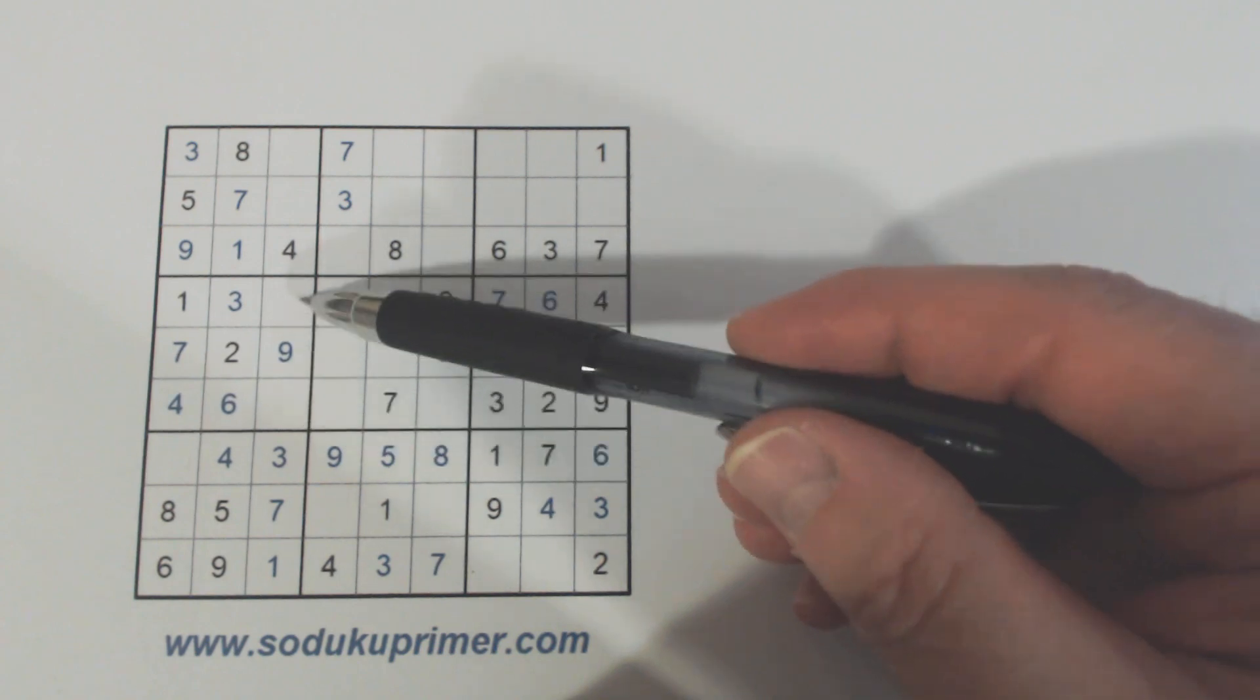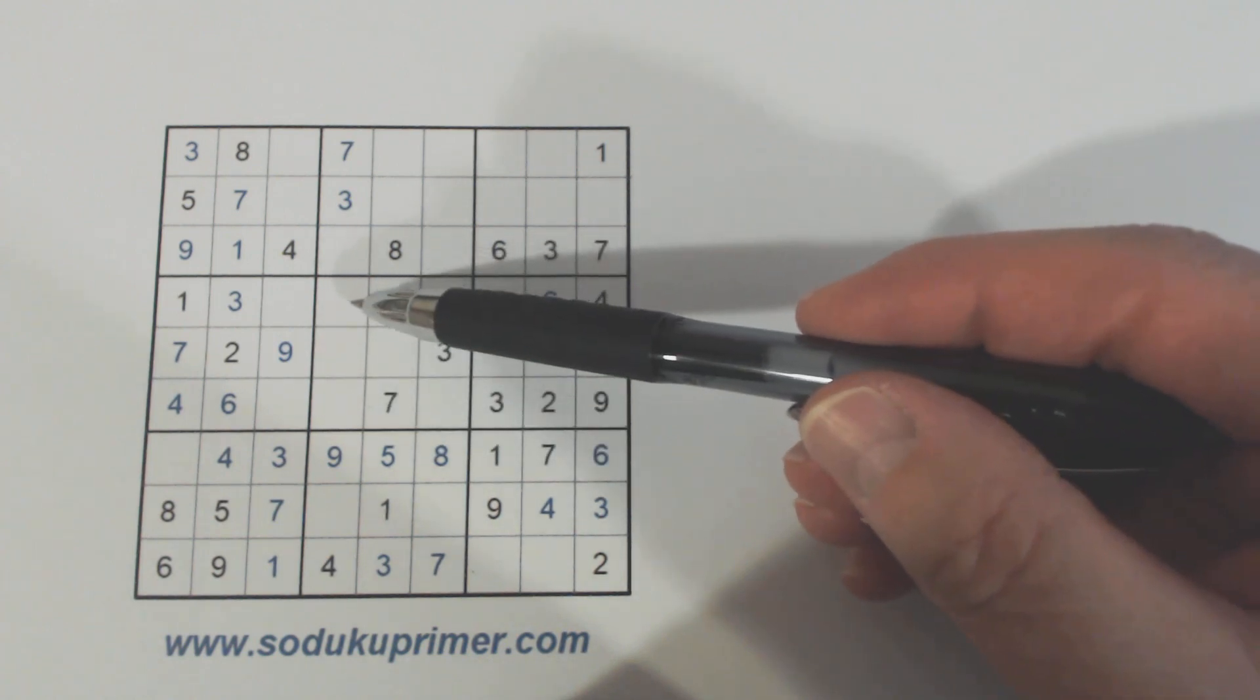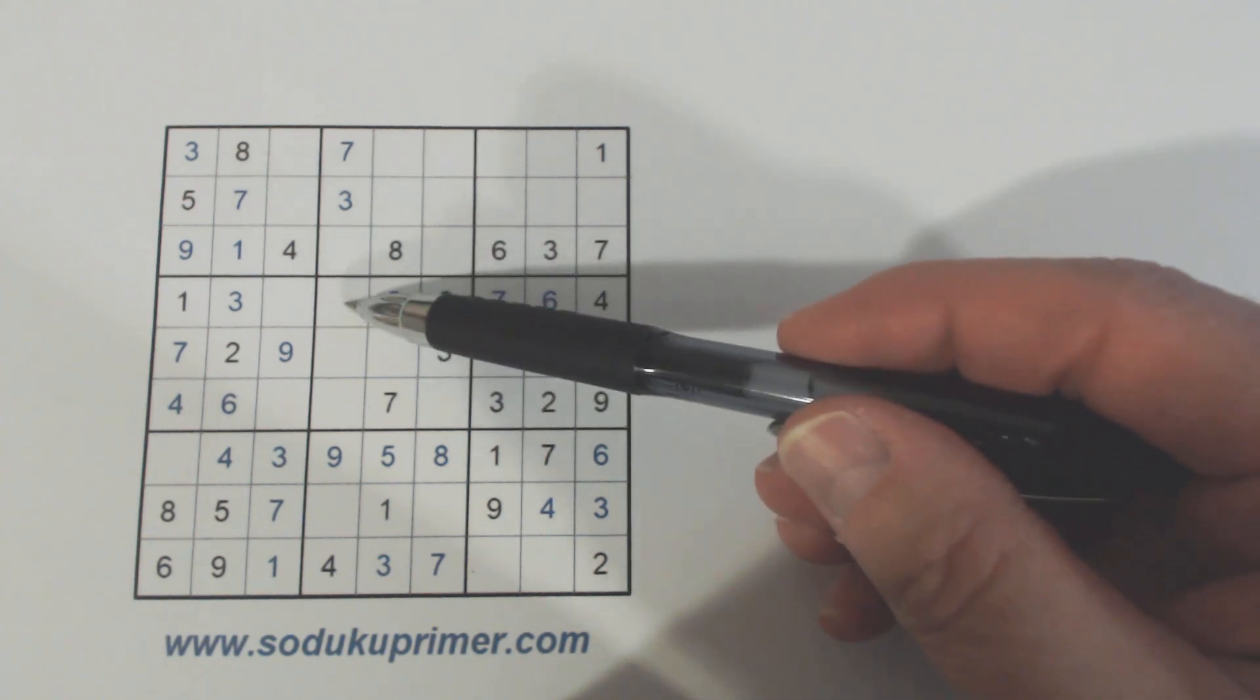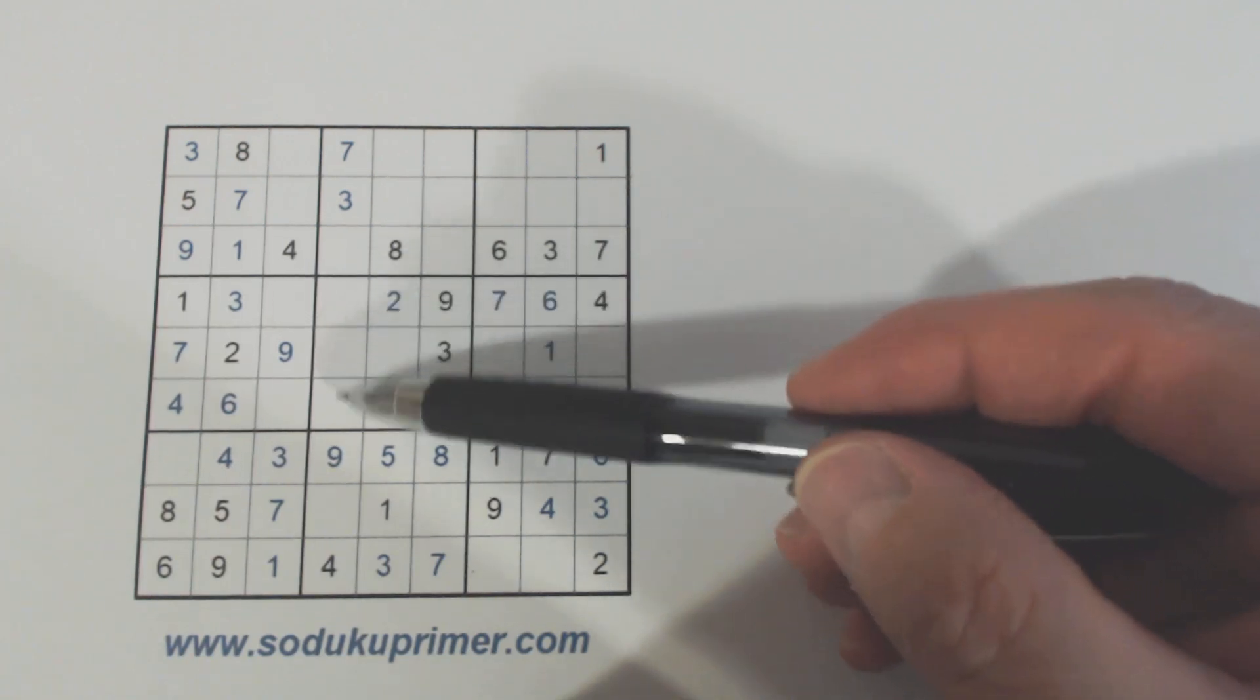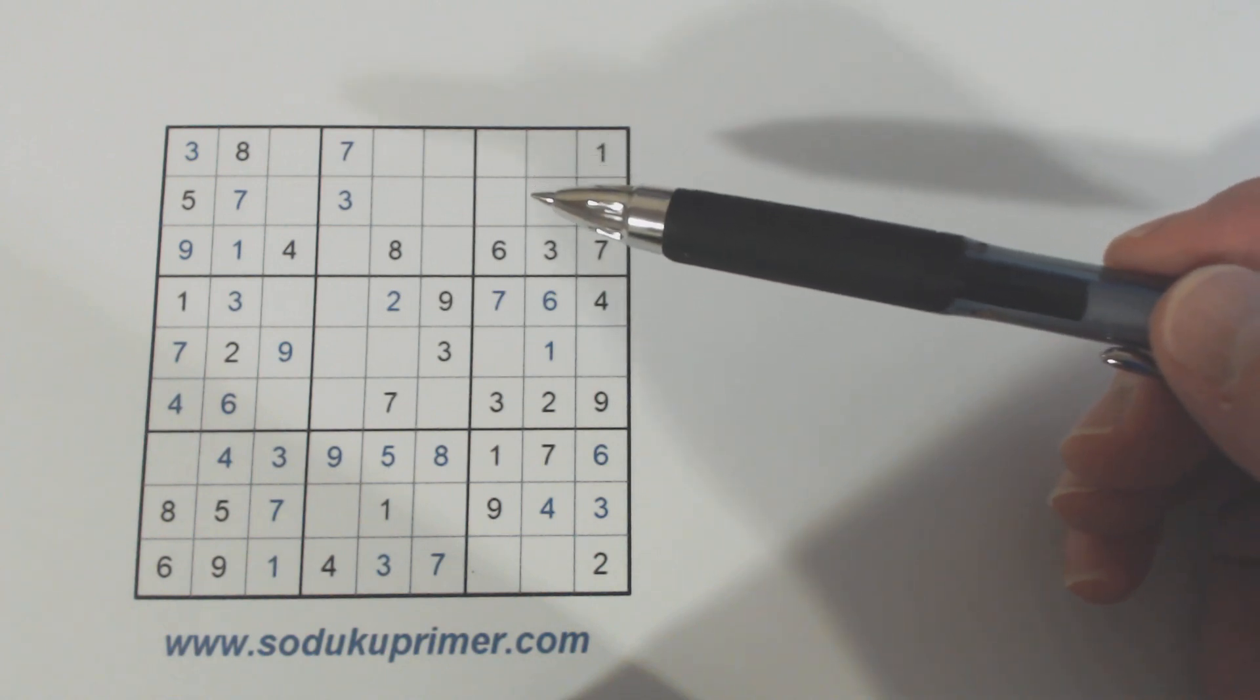Since these are 5, 8 twins here these can't be 5, 8 twins. Because if they were then this puzzle would have at least two solutions or in other words it would be ambiguous. Since we know one of these is an 8 we know the other one can't be a 5 because of that rule.